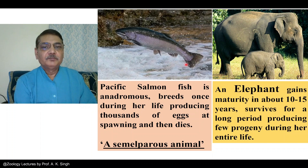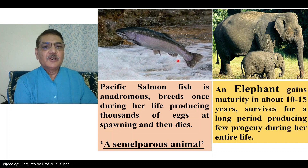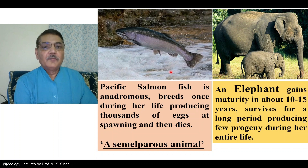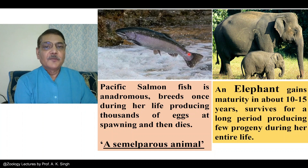Before I explain it, these are two figures — two animals are actually shown. On the left side you can see a fish, which is specifically salmon. These fishes — particularly this specific salmon — are anadromous, meaning it is a migratory fish. It migrates from the sea to freshwater areas for reproduction purposes. It breeds once in its lifetime, produces thousands of eggs, and then this fish dies.